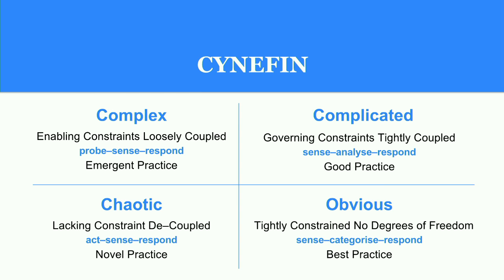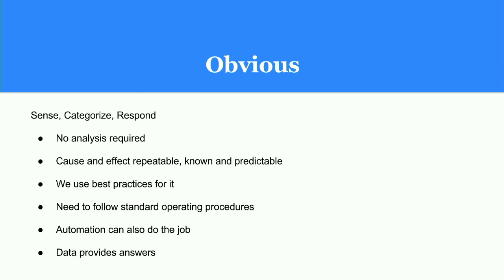Here is the picture showing all four domains in use — obvious, complicated, complex, and chaotic. In the obvious domain, we can sense, categorize, and respond. We can easily identify the problem and quickly pick the solution — it may be simple support tickets where we know how to fix it. No analysis is required because we know the best practices and follow standard operating procedures. Here, we can use any framework we're already continuously using without making further changes to our processes.